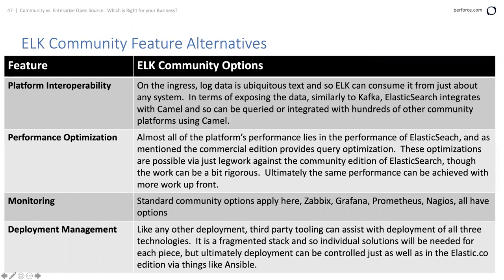Most of the platform's performance comes from Elasticsearch itself — Kibana is mostly executing in the browser. Pipelining now allows horizontal distribution of log ingestion. The standard community monitoring options apply: Prometheus, Nagios, Zabbix, and Grafana. Third-party tooling like Ansible can help with deployment — another fragmented stack, but Ansible can help you come up with a consistent deployment image.